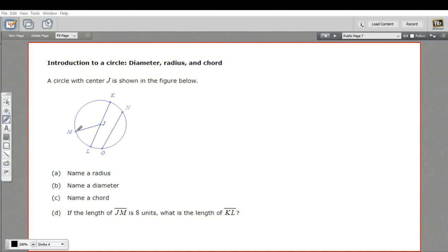So a line that goes from the outside of the circle to the center, that's called a radius. So if we want to name a radius, we could look at MJ here. And we could say segment MJ is a radius.